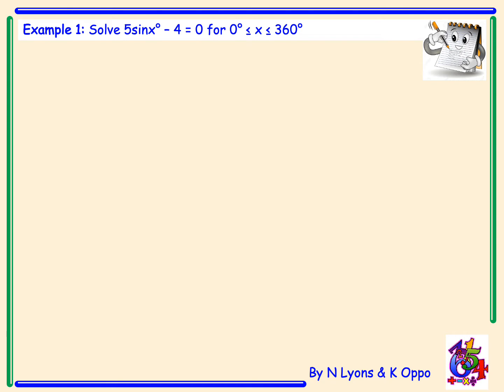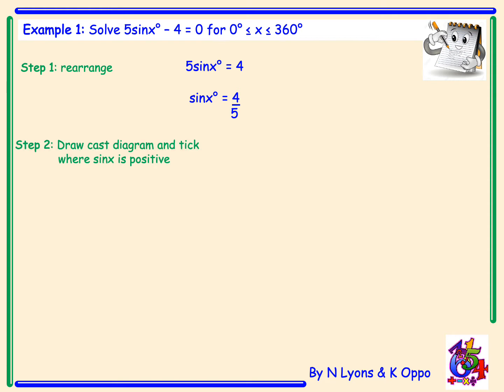Example 1: solve 5sin(x) minus 4 equals zero for x between 0 and 360 degrees. The first step is to rearrange: 5sin(x) minus 4 equals zero becomes 5sin(x) equals 4, and dividing by 5 gives sin(x) equals four fifths. From there we draw the CAST diagram and tick where sine x is positive, since sin(x) equals positive four fifths — sine is positive in the first and second quadrants.